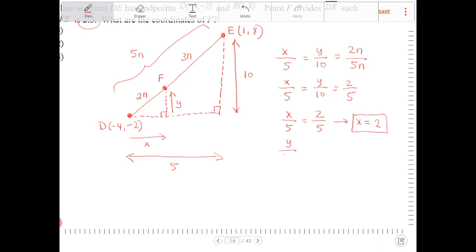I'm going to take Y over 10, and again, set that equal to 2 fifths. And the only way that this would work is if I multiply both sides by 10, I end up with 20 over 5, or Y is simply equal to 4.